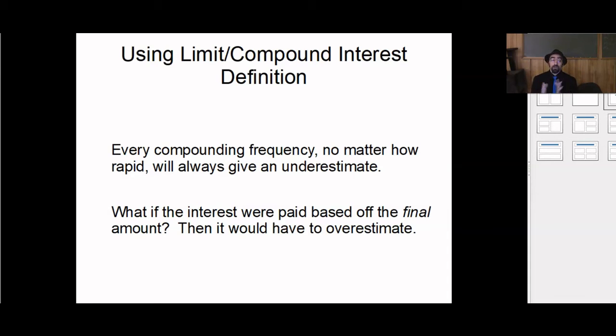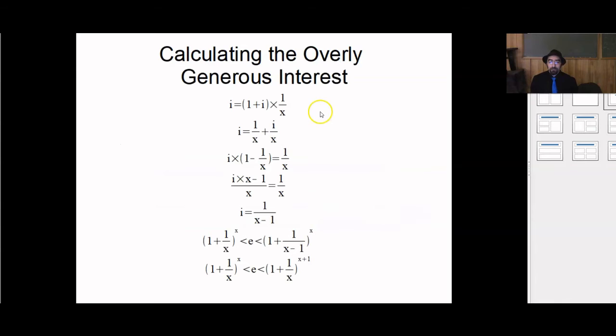What if the interest were based off the final amount? Well then, since it's based on the highest amount you would have, then it would get you an overestimate. So now that we have an underestimate and an overestimate, in theory, we could just increase the compounding frequencies and get a very slight overestimate and a very slight underestimate and just say it's got to be somewhere between these two. But of course, calculating the interest, if we calculate based on the initial amount, that's straightforward to do. If we try to do that with a final amount, we get an implicitly defined equation.